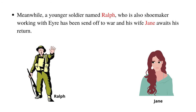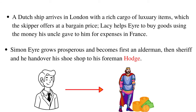Meanwhile, a younger soldier named Ralph, who is also a shoemaker working with Simon Eyre, has been sent off to war, and his wife Jane awaits his return. A Dutch ship arrives in London with a rich cargo of luxury items, which the skipper offers at a bargain price. Lacey helps Simon Eyre buy goods using the money his uncle gave him for his expenses in France. After that, Simon Eyre grows prosperous and becomes first an alderman, then sheriff, and he hands over his shoe shop to his foreman, Hodge.